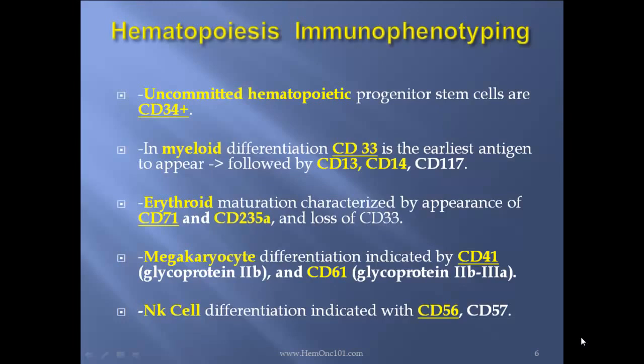Hematopoiesis immunophenotyping — crucial to know for hematologists. Uncommitted hematopoietic progenitor stem cells are CD34 positive. In myelodifferentiation, CD33 is the earliest antigen to appear, followed by CD13, CD14, and CD117. Erythroid maturation is characterized by appearance of CD71 and CD235A and loss of CD33. Megakaryocyte differentiation is indicated by CD41, which is glycoprotein 2B, and CD61.